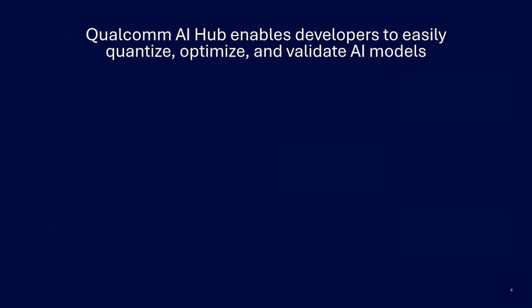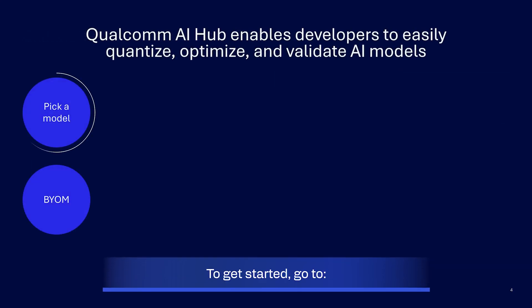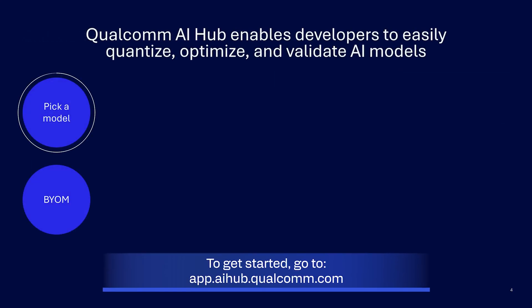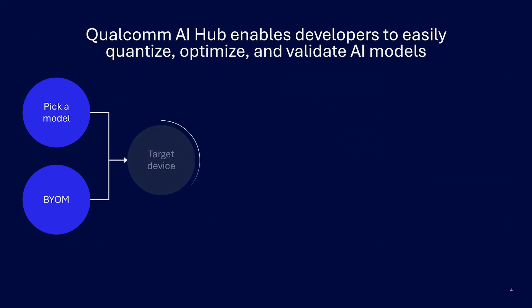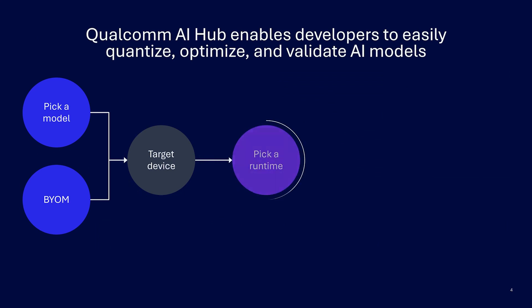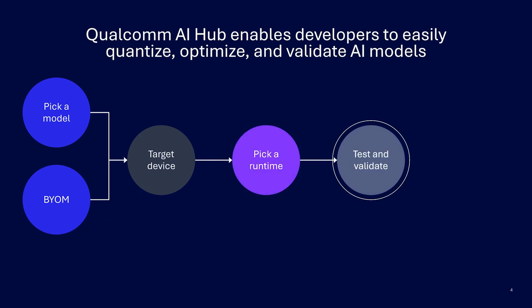So how do you get started? You can do one of two things. One, you can pick from one of our hundreds of open source ML models that have been pre-optimized for running on Qualcomm chipsets. Or two, you can bring your own model. After picking a model, you can compile it for a specific device using the runtime you've specified. The model is then optimized and Qualcomm AI Hub supports iterating on your model until the performance requirements are met.